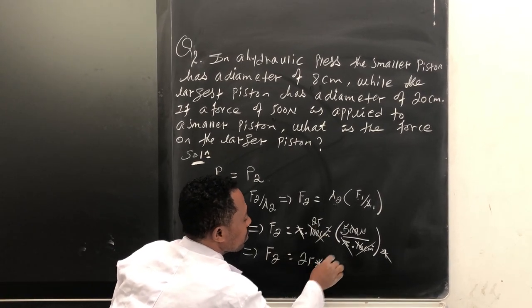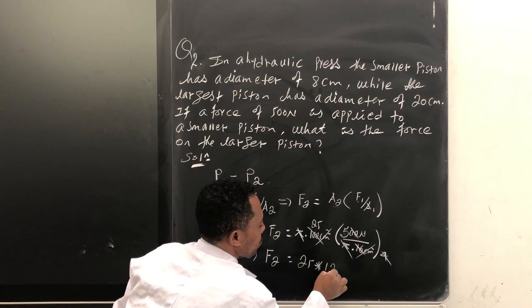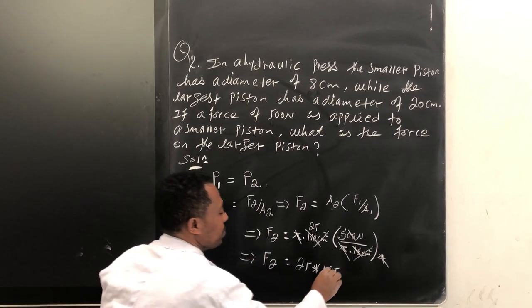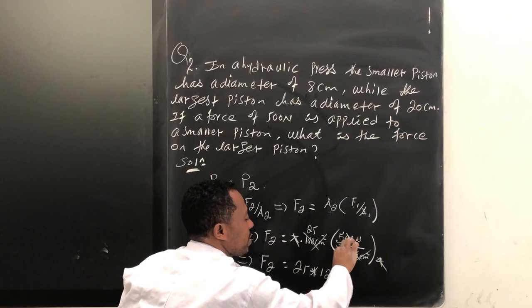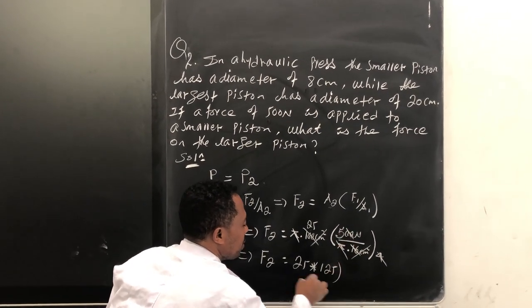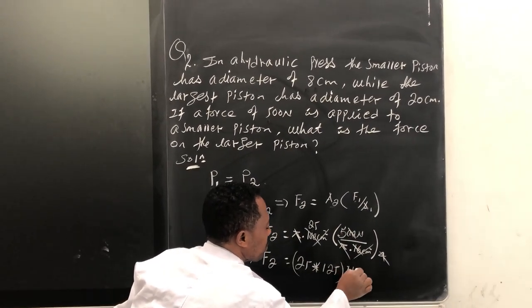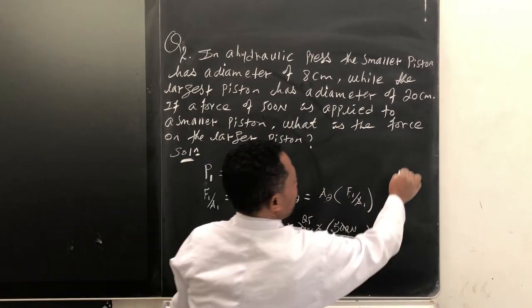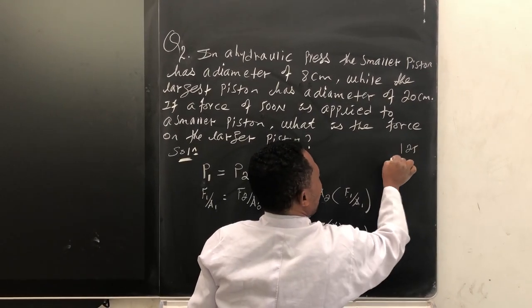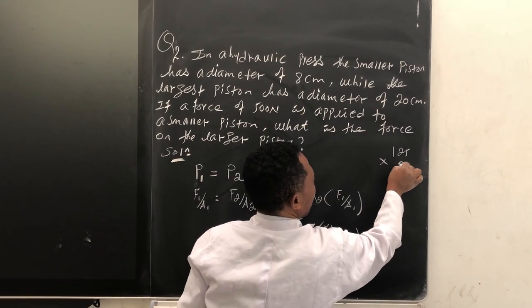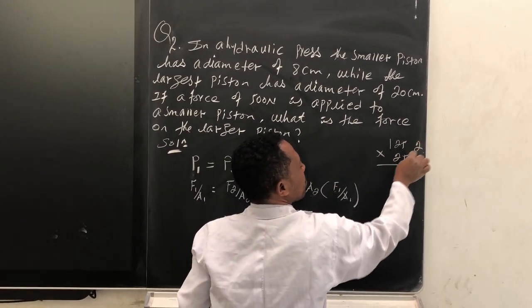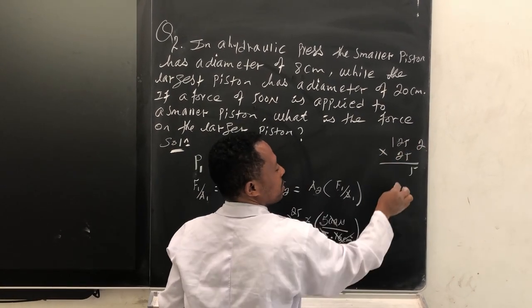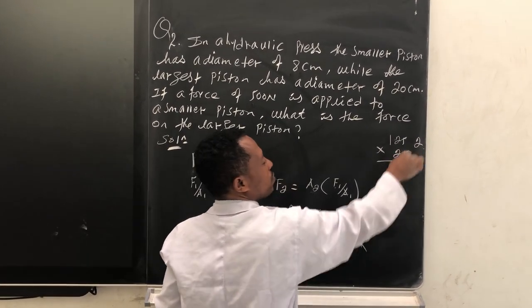times 125. So 125 times 25: 5 times 5 is 25, carry 2, it's 10 and then it becomes 12, carry 1,